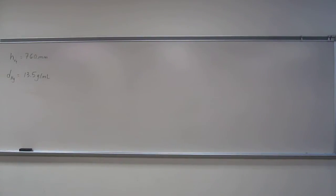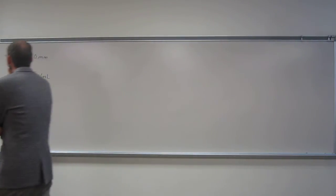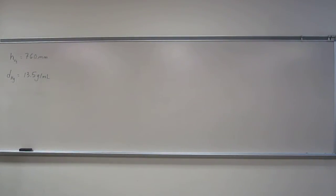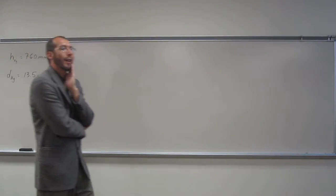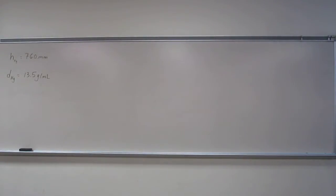So let's do this problem here. It says if we have a barometer that is at sea level and it's measuring 760 millimeters and the density of mercury is 13.5 grams per mil, what would be the height of a column of water at the same temperature, pressure, everything.